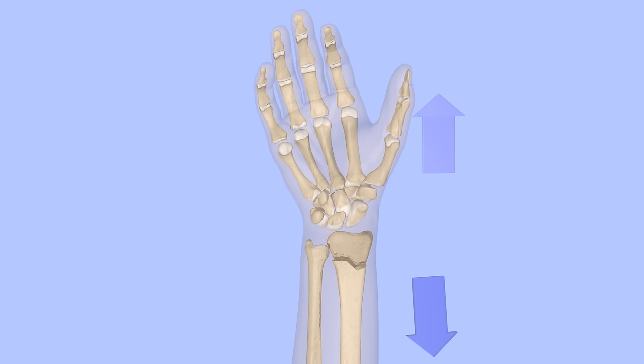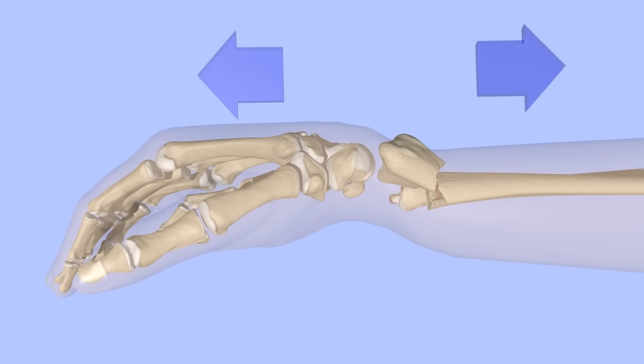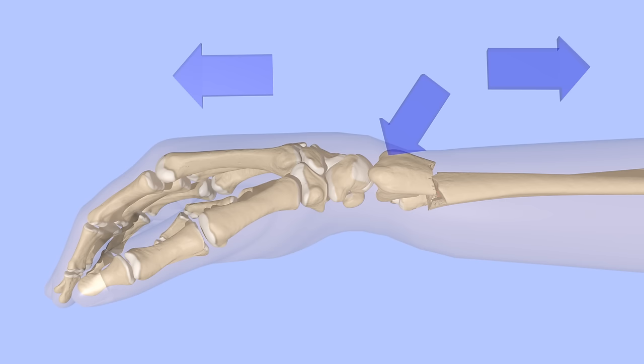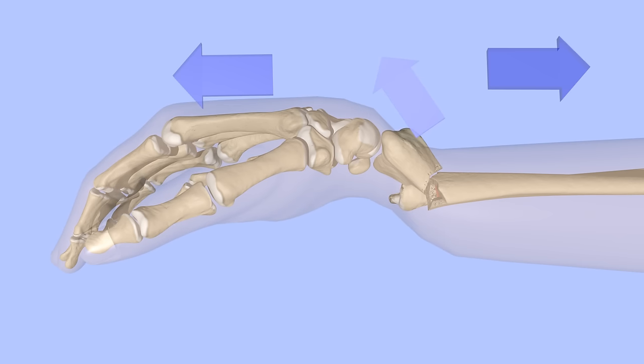The reduction itself is performed by pulling the wrist in traction. Force is then applied to push the fragment back into place. It is often necessary to accentuate the fracture while applying traction to free the fragment before pushing it into place.